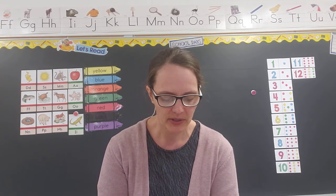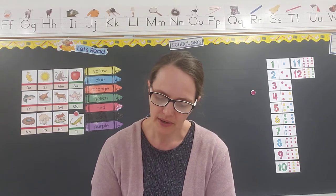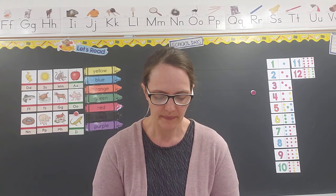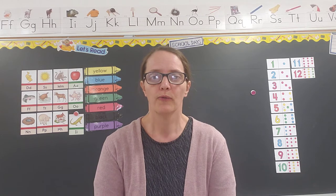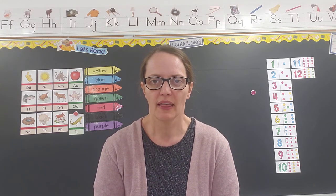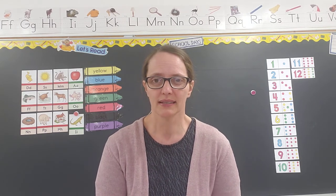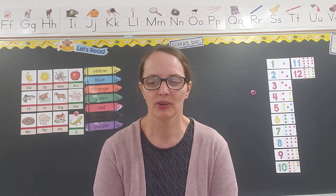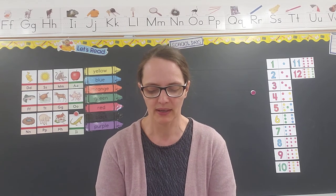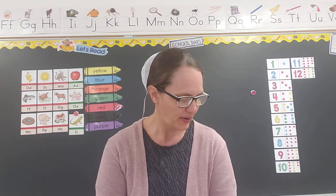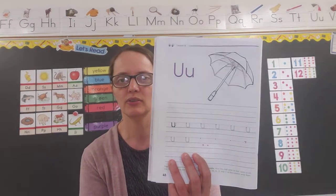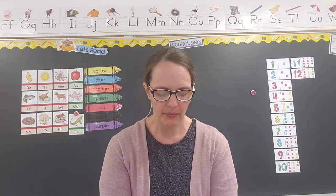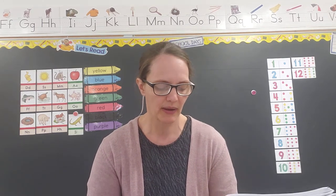Let's say the memory verse together one more time. It's Matthew 6:21. All together: 'For where your treasure is, there will your heart be also. Matthew 6:21.' One more time: 'For where your treasure is, there will your heart be also. Matthew 6:21.' Good job! Is everybody done with this page? You got your U's all done.